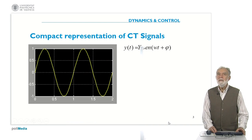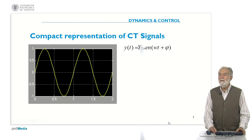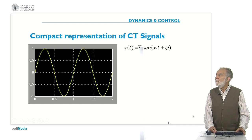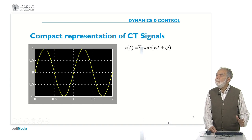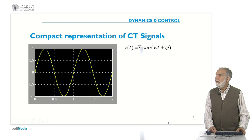If you consider, for instance, a continuous time signal like that one on the screen, y of t equal y of 0, sinus of omega t plus phi, then if you want to represent it in a compact form, you realize that here there are three parameters: the magnitude y0, the frequency omega, and the phase phi.